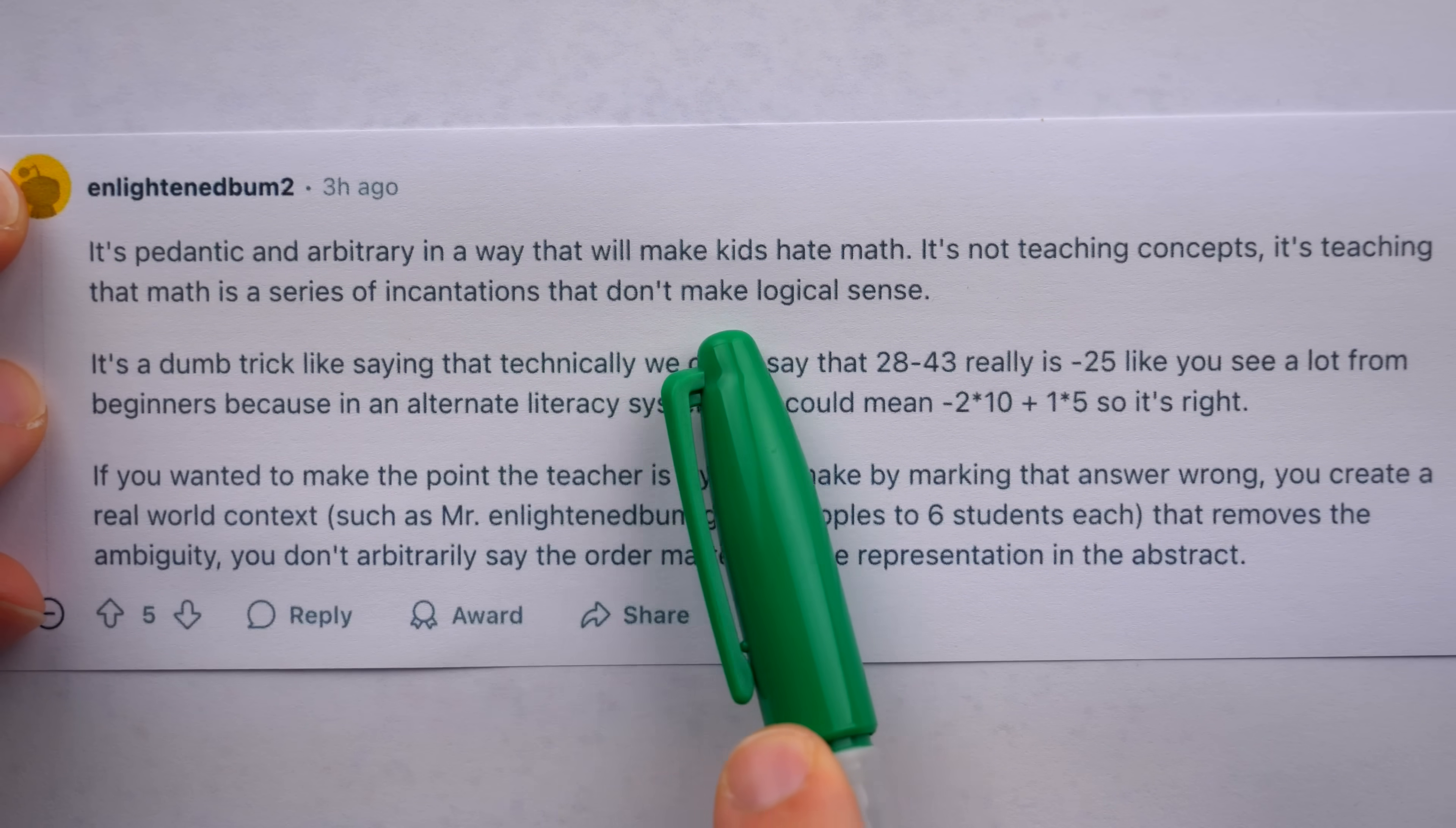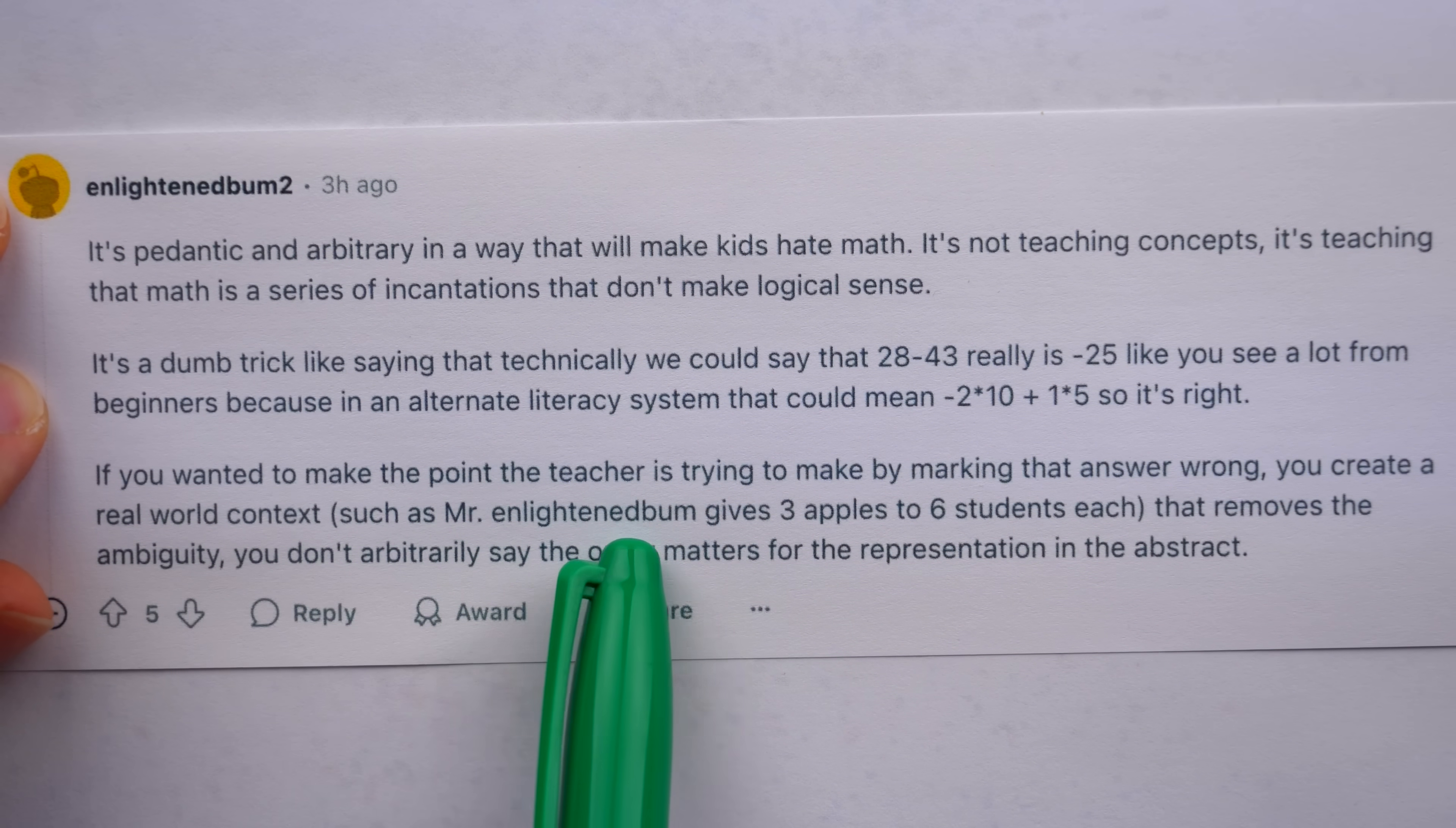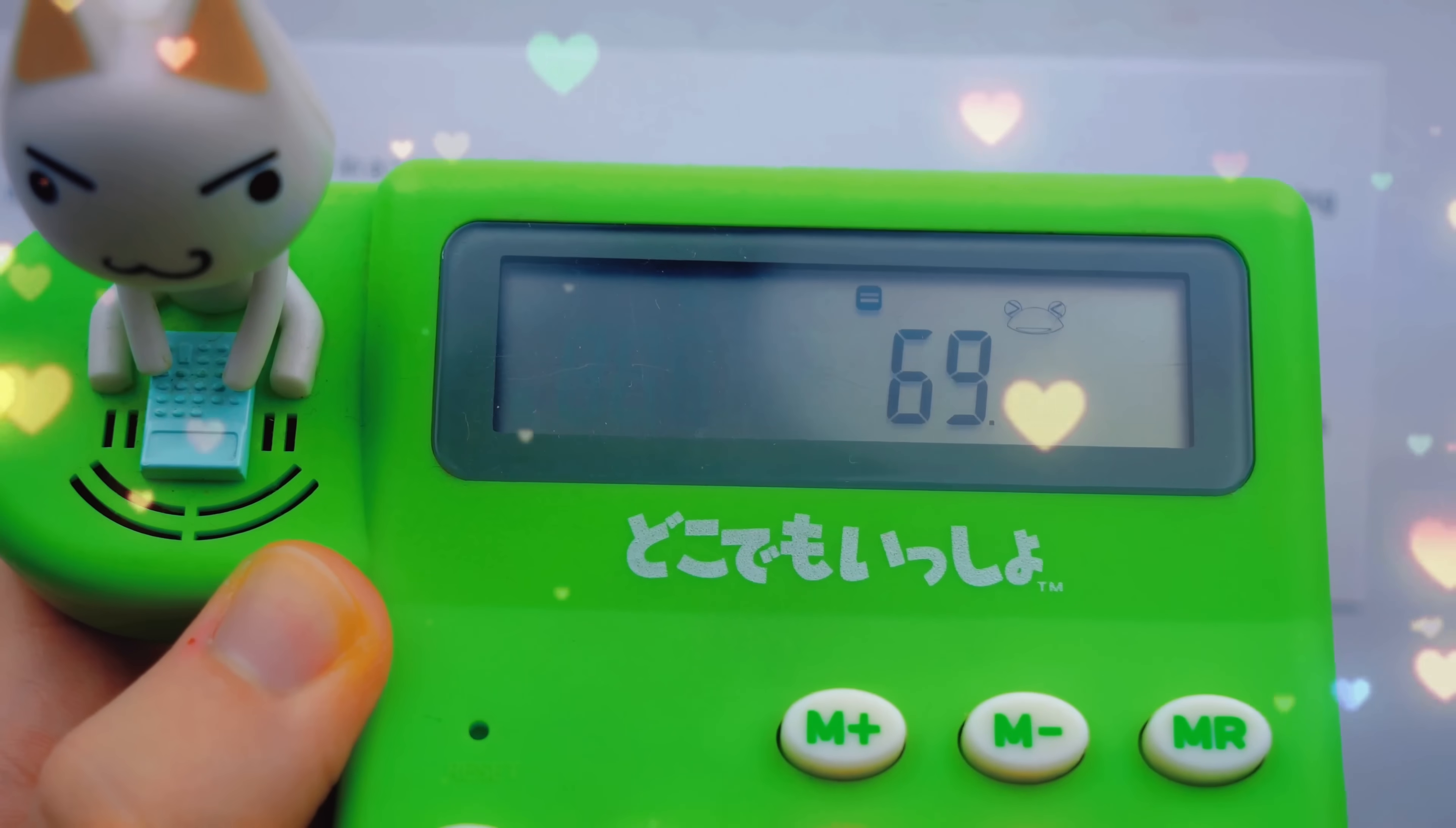It's pedantic and arbitrary in a way that will make kids hate math. It's not teaching concepts. It's teaching that math is a series of incantations that don't make illogical sense. It's a dumb trick, like saying that technically we could say that 28 minus 43 really is negative 25, like you see a lot from beginners because in an alternate literacy system, that could mean negative 2 times 10 plus 1 times 5. So it's right. If you wanted to make the point the teacher's trying to make by marking that answer wrong, you create a real world context, such as Mr. Enlightened Bum gives 3 apples to 6 students each, that removes the ambiguity. You don't arbitrarily say the order matters for the representation in the abstract. Wait just a minute here. 28 plus 43 minus 25 minus 2 plus 10 plus 1 plus 5 plus 3 plus 6. 1, 5, 3, 6. I knew it as foretold in the prophecy.